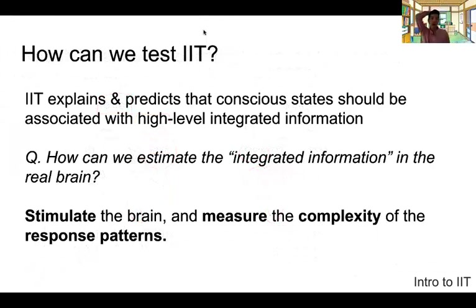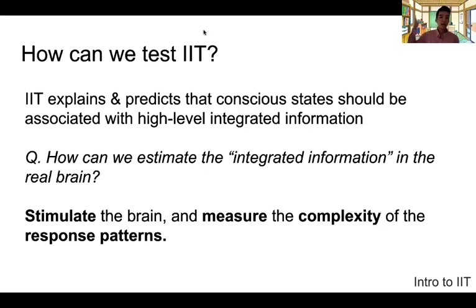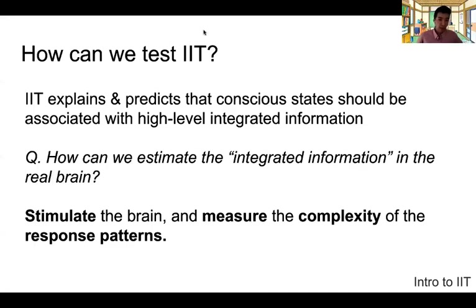The next question is how we can test this idea. IIT explains and predicts that conscious states should be associated with a high level of integrated information. How can we estimate integrated information in the real brain? In the real brain, it's very difficult to compute integrated information exactly, and that is an ongoing topic of research. But if we can stimulate the brain and measure the complexity of the response patterns, then we can estimate the integrated information of the real brain. That will be explained in the next video.